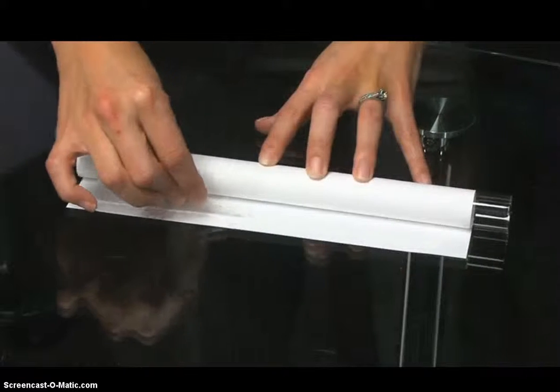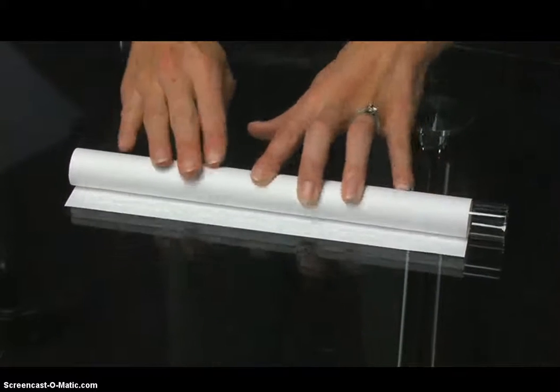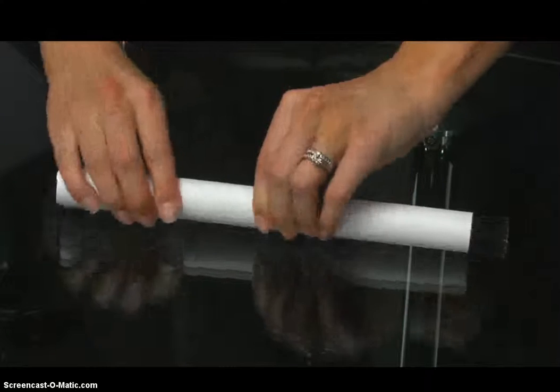Spread the glue with the dauber and continue rolling the tube to press the glued edge firmly to the typing paper. Use the damp sponge to remove any extra glue.